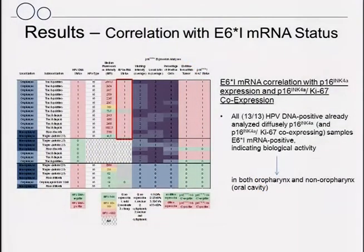Finally, we correlated these findings with the E6 mRNA status. These are preliminary results, but we found that all 13 already analyzed HPV DNA positive samples that showed a diffuse P16 expression pattern were also E6 star 1 transcript positive, indicating biological activity. This was true for both oropharynx and non-oropharynx. There were two analyzed non-oropharyngeal samples with this diffuse expression pattern, and this was also correlated with E6 RNA detection.